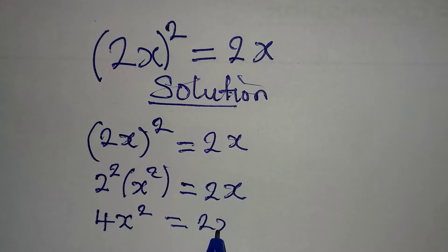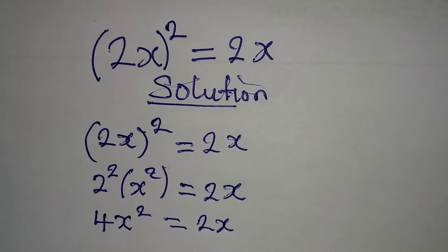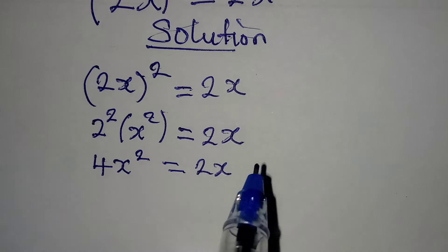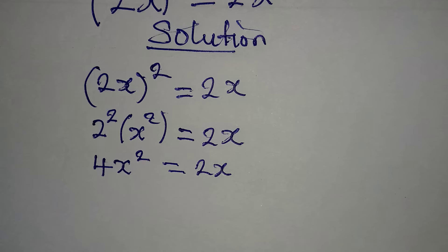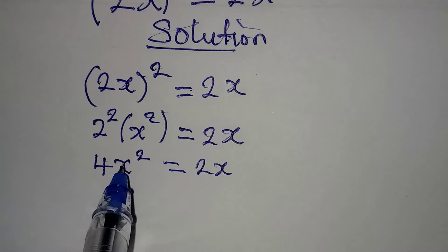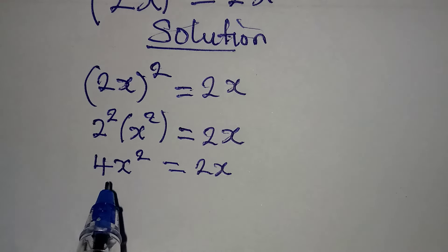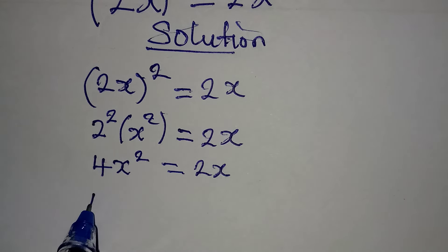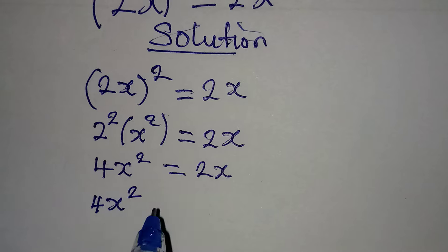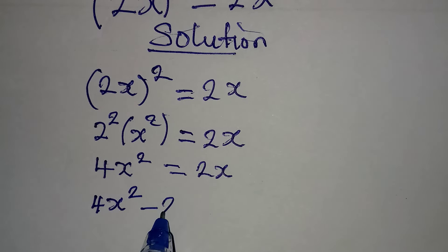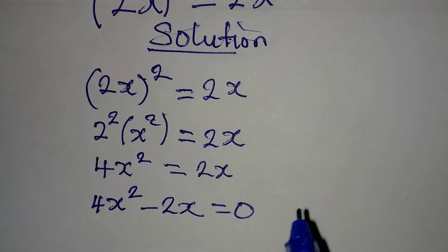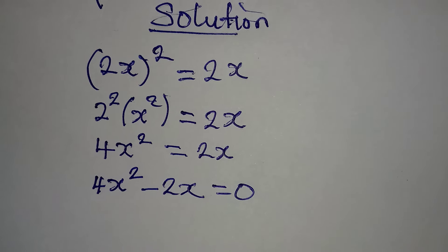Now you would be wrong if you cancel out the x on both sides — that approach is incorrect. What you should do instead is bring everything to the same side, giving you 4x squared minus 2x equals 0.